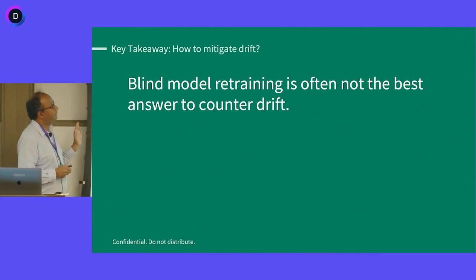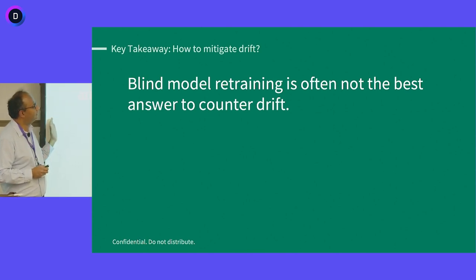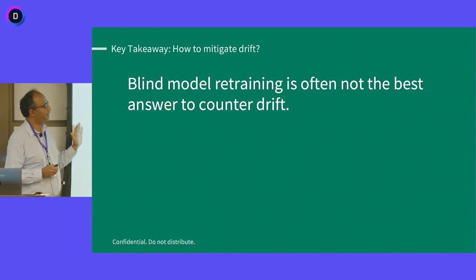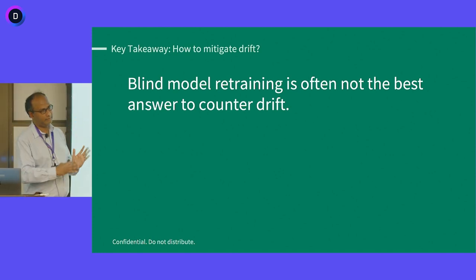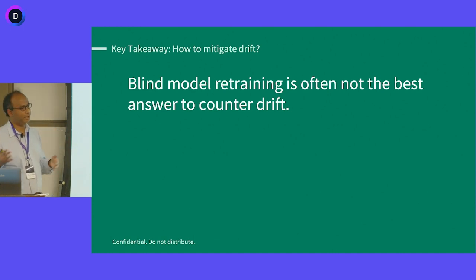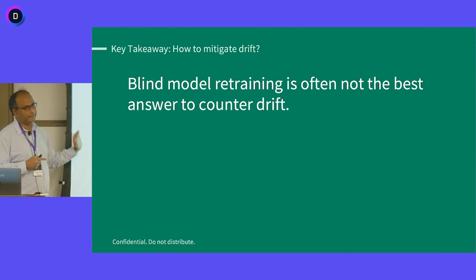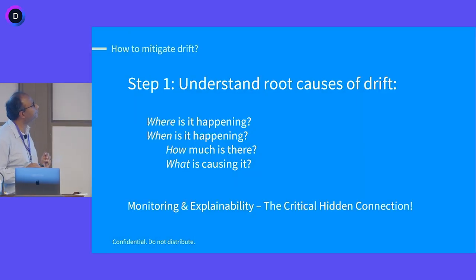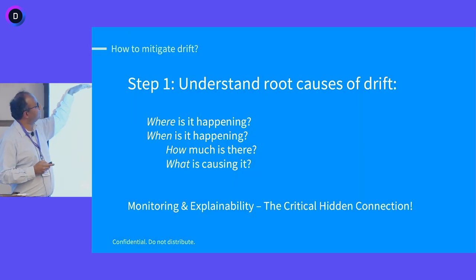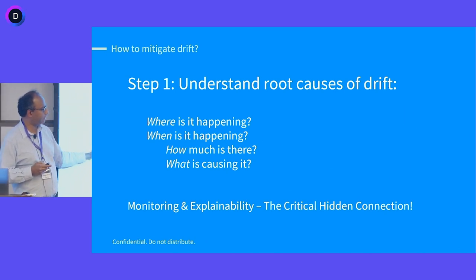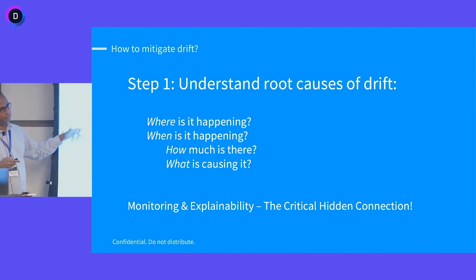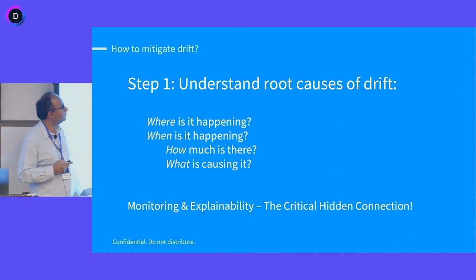One thing to keep in mind is that the baseline method — just retrain the model as new data comes in — is often not the best answer to counter drift. What we would instead suggest is to understand the root causes of drift: where is it happening, when is it happening, how much is there, and what is causing it? This is the step where root cause analysis leverages the connection with explainability.